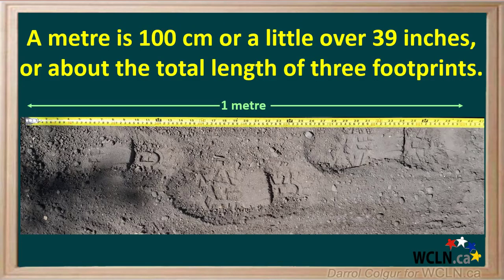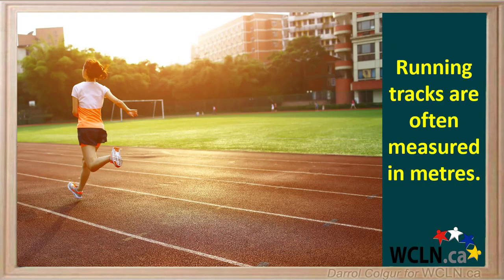A meter is 100 centimeters or a little over 39 inches, or roughly the total length of the three footprints shown here. Running tracks are usually measured in meters.